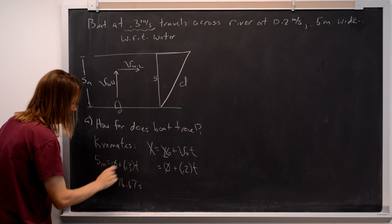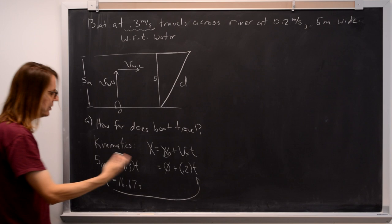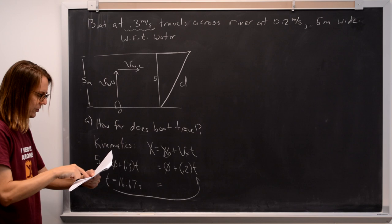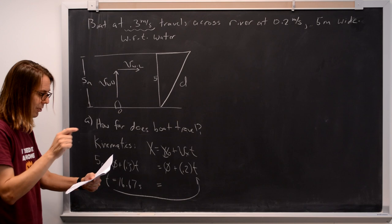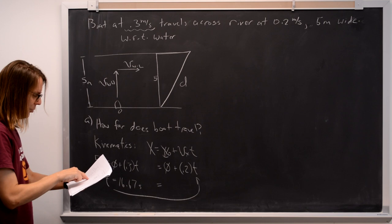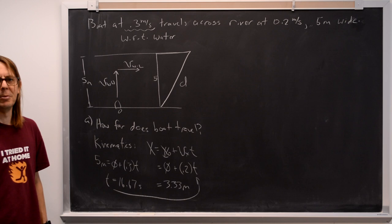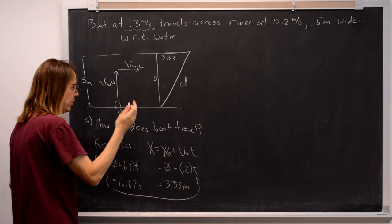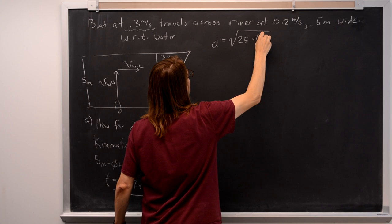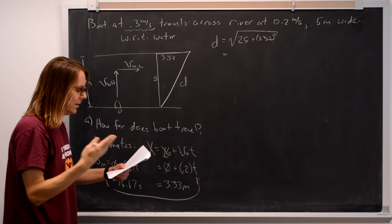So now the y gave us the time, so we go back and plug that in. 16.67 seconds gives us an x displacement of 3.33 meters. So it went five this way, it went 3.33 that way. So then we just say d equals the square root of 25 plus 3.33 squared, Pythagorean theorem, to get 6 meters. And that is the answer.